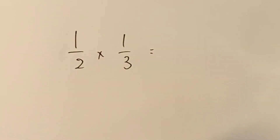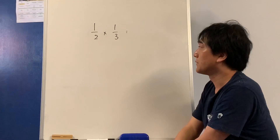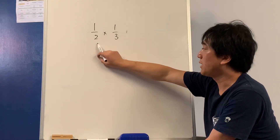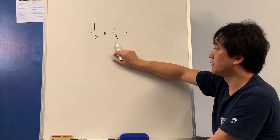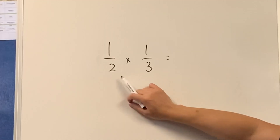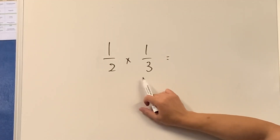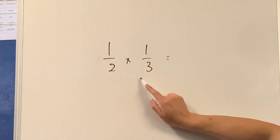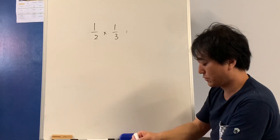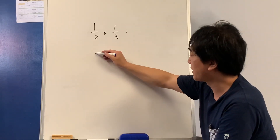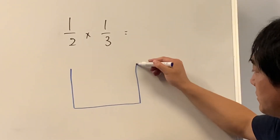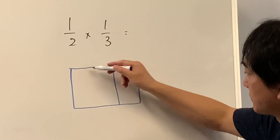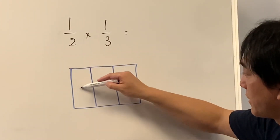Now this is the biggest problem: 1 half times 1 third. Remember, this is like language — it means 'of'. So it's 1 half of 1 third. Let's find out what 1 third is.